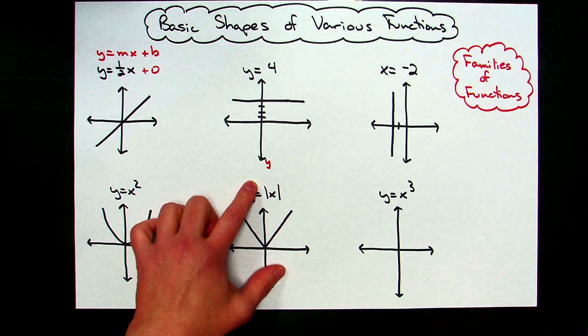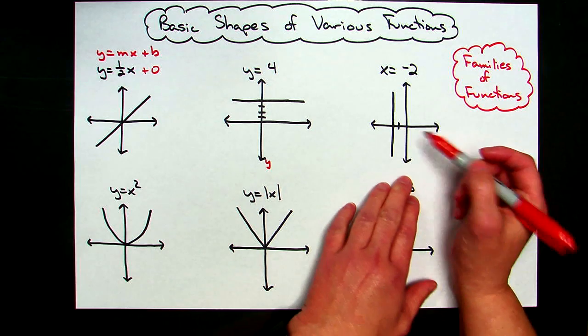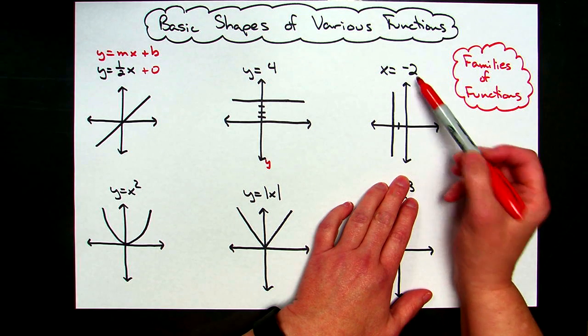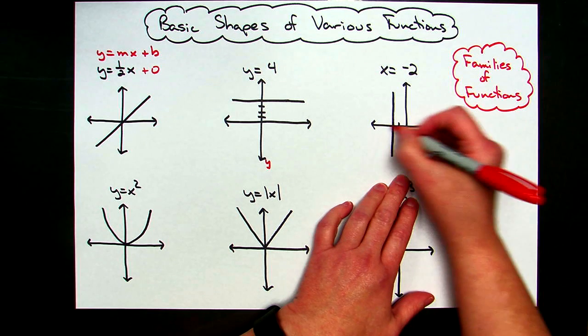So any equation that starts with y equals is always a horizontal line. This same is true here if I've got x equals negative two. Then I would go to the x-axis